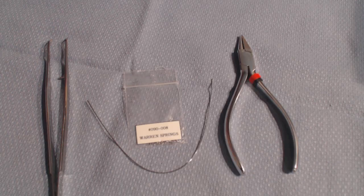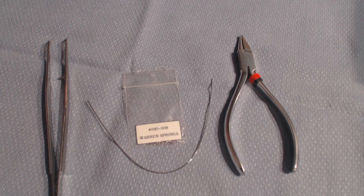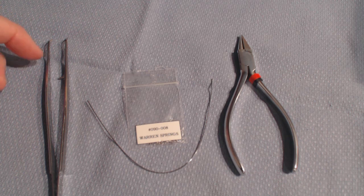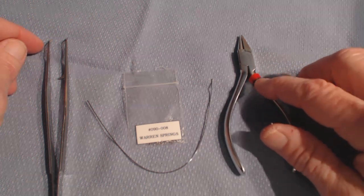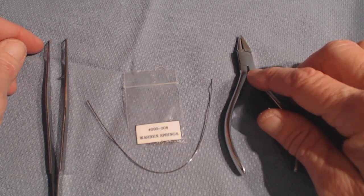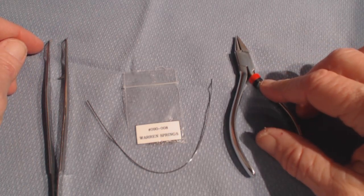We are going to discuss the placement of a Warrant Spring on an arch wire, and the armamentarium for this is just a light wire plier, and then a three prong, a burbank plier, which is a 139 or a flat on round.